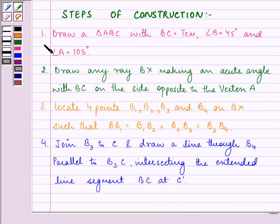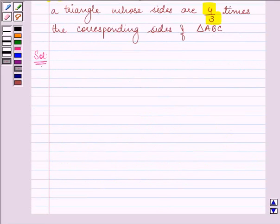The first step of construction is to draw a triangle ABC with BC equal to 7 cm, angle B equal to 45 degrees and angle A equal to 105 degrees. So we have BC equal to 7 cm.